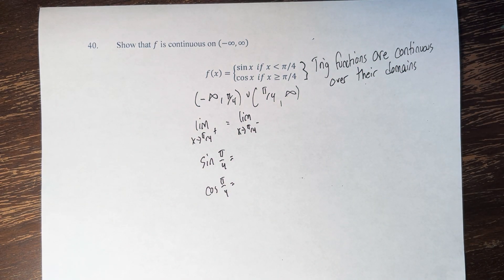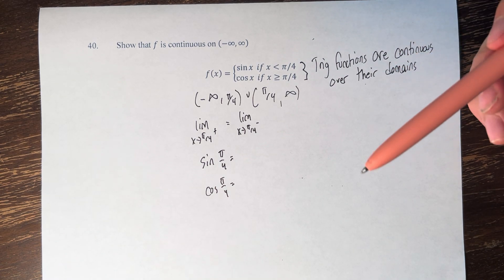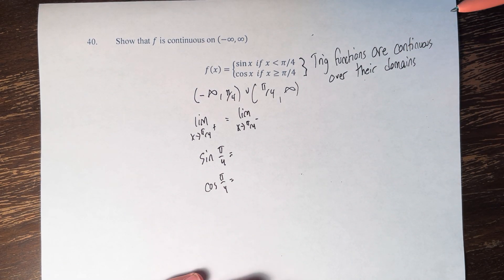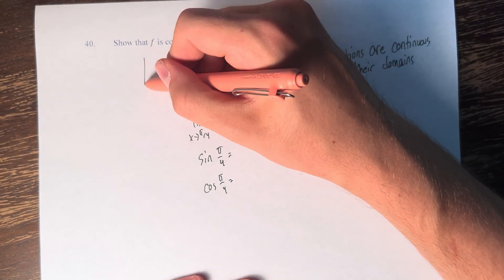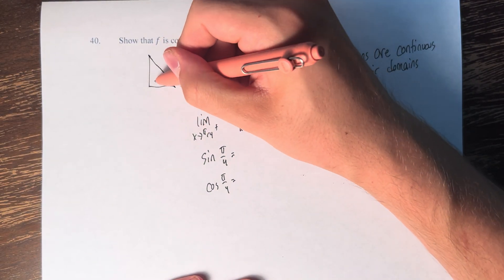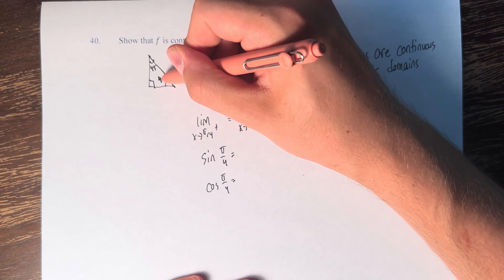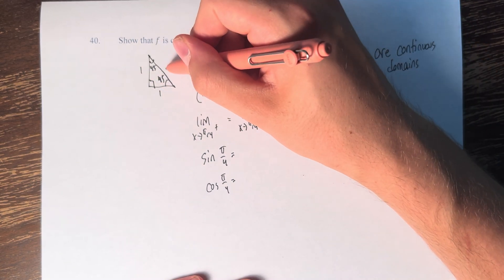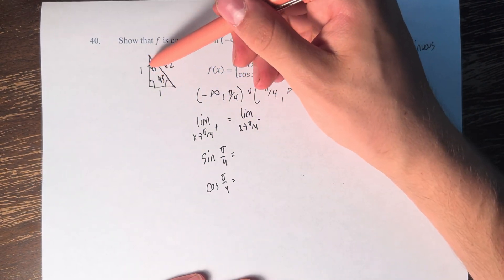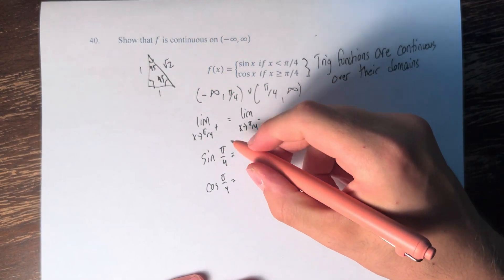And we know from the basic understandings of sine and cosine, if you want to think in terms of a triangle, if you have a 45-45-90 triangle, the sides are 1, 1, and root 2. Therefore the sine or cosine of 45 is 1 over root 2.